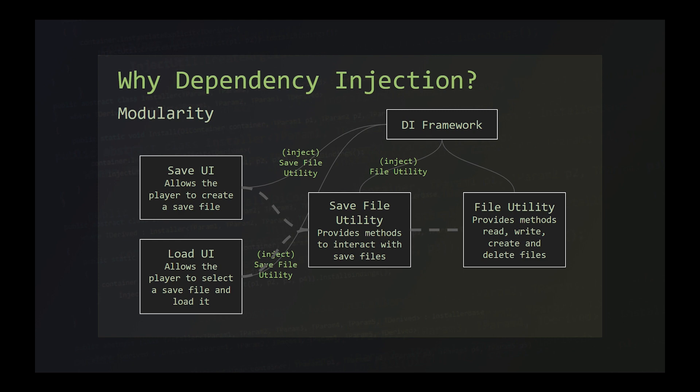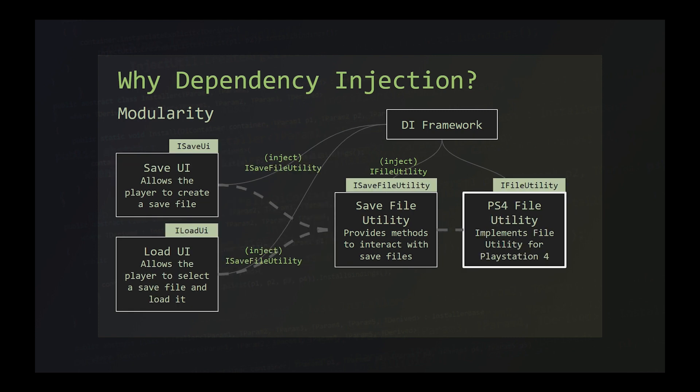Injection can happen in a number of ways. In this example, we are using constructor injection, where the constructor of each class takes its dependent object as parameters. By analysing the parameters the constructor has, the framework can generate a dependency tree or graph, which it then traverses to ensure everything gets constructed and injected in the correct order. Our game needs to target multiple platforms, which have different requirements for interacting with the file system. In order to target multiple platforms, we need a way to swap out the concrete implementation of the file utility that gets constructed and injected.